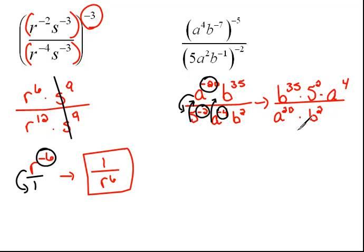Now we can start simplifying. We like to put our numbers first, so let's put 5 squared, which would be 25. And then for our a's, we have a to the 4th over a to the 20th, so subtracting the exponents, 4 minus 20 would be a to the negative 16th.